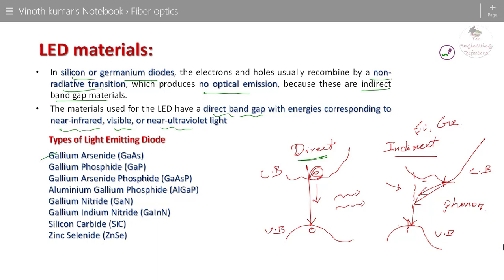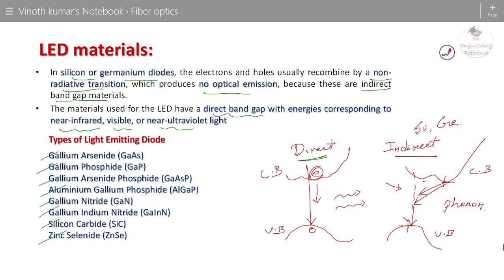The semiconducting materials used to manufacture LEDs include gallium arsenide, gallium phosphate, gallium arsenide phosphate, aluminium gallium phosphate, gallium nitride, gallium indium nitride, silicon carbide, and zinc selenide. These materials have band-to-band transitions and emit light in colors such as red, yellow, white, and blue depending on the material combination. For example, gallium arsenide LEDs emit light in the near-IR range; gallium phosphate produces red and green light; gallium arsenide phosphate produces red or yellow light.